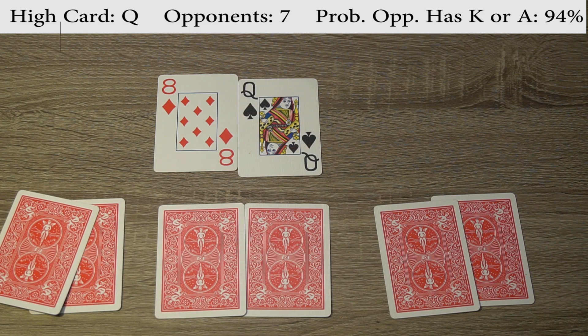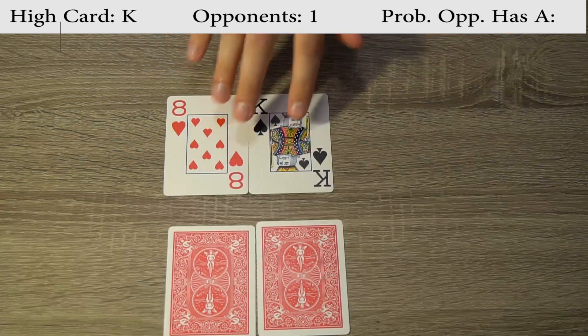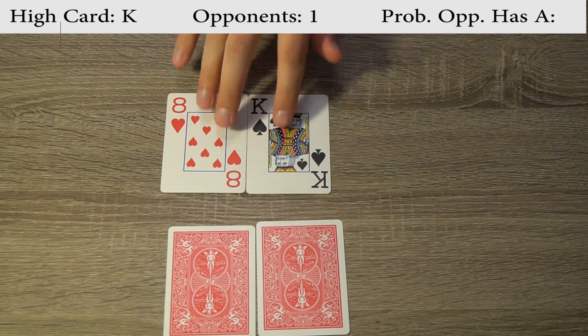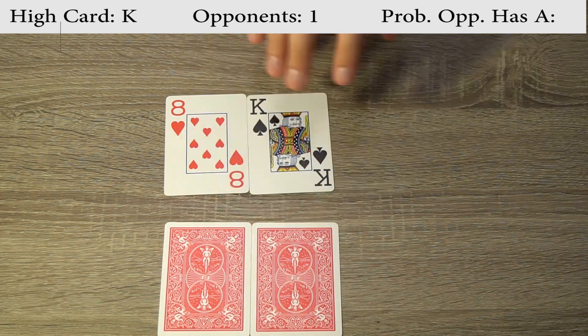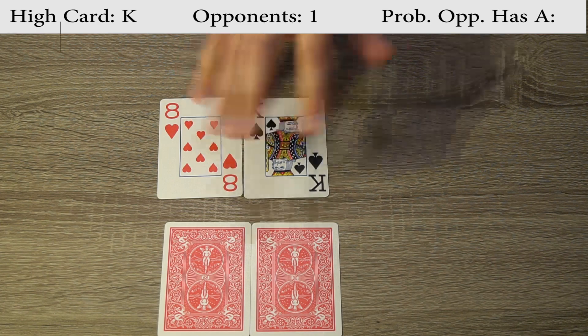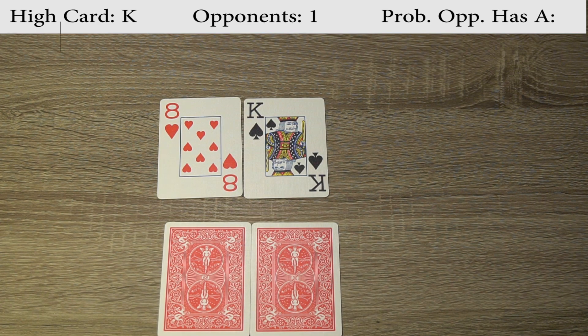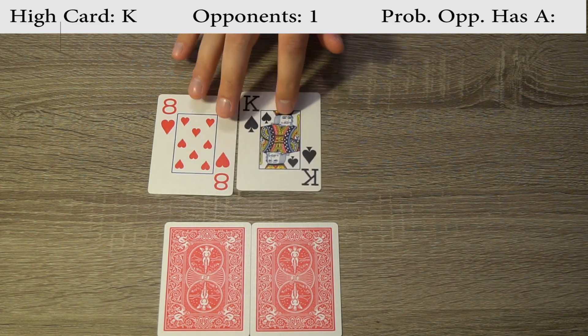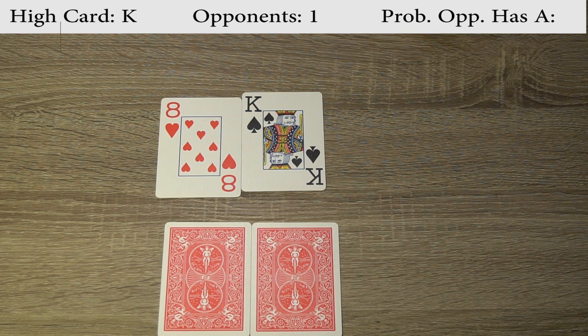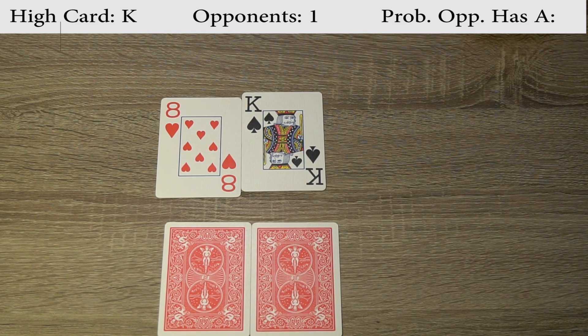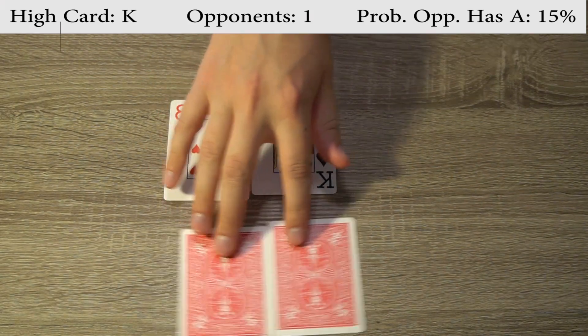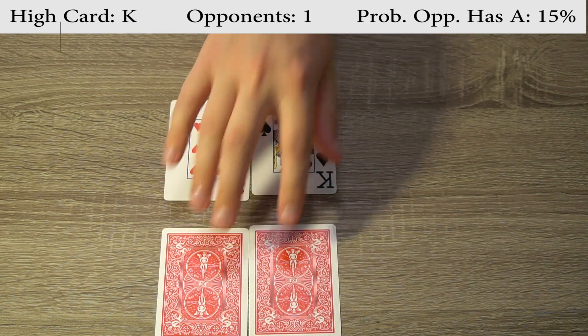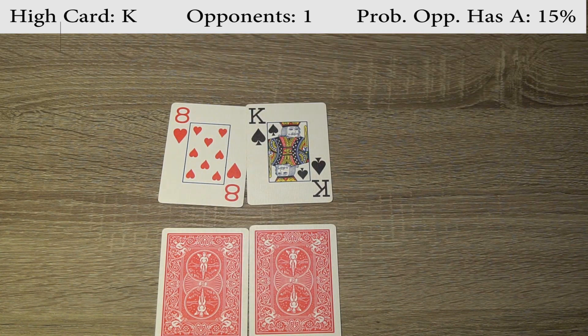Let's move forward and run through these probabilities again with now a king as our highest card. So right now our hand is king-eight and I'm wondering what is the probability that the opponent has an ace, that the opponent has this higher card. When we had the queen as a high card, it was about a 30% chance that the opponent had a higher card than us. In this case, when we have a king as our high card, the probability that the opponent has an ace is roughly 15% of the time. So between one and two times out of every ten draws, the opponent will have an ace in his hand when we have a king as a high card.